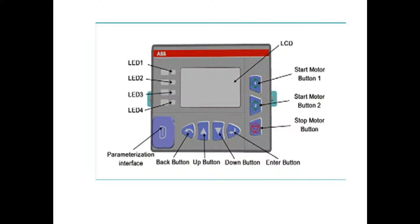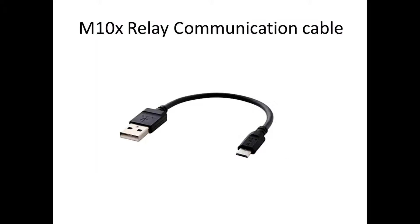In this video we are going to see about the M10X relay. The M10X model relay is an ABB make. This relay is used for low rating motor protection. The software used for this relay is MCU. This is the relay M10X and this is the cable used for communication.